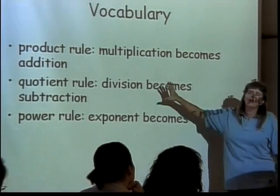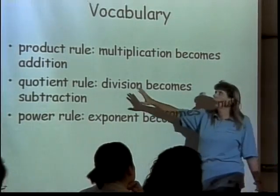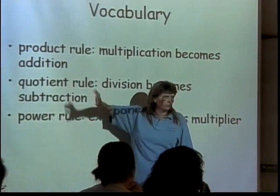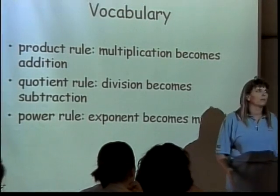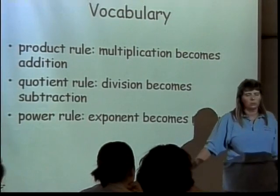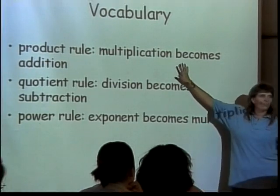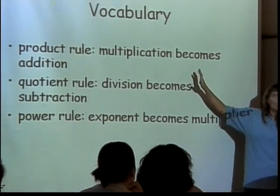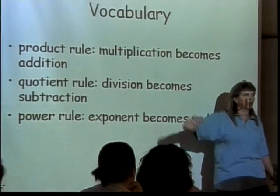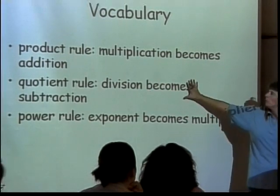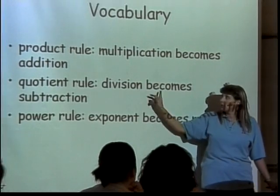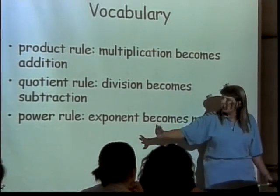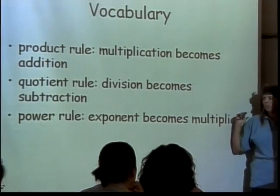The three laws of logarithms they refer to as the product rule. The reason I don't like that is because once you get to calculus, there is a product rule that is completely different than this one. In another book, it's a much more descriptive title, it was called the multiplication becomes addition rule. Your book also has a thing called the quotient rule, which the better title is division becomes subtraction.